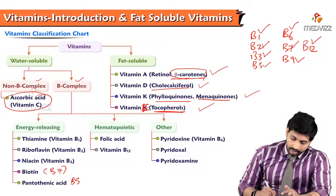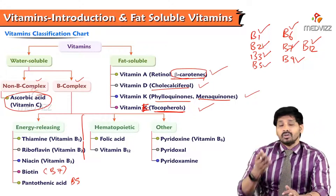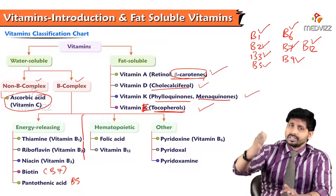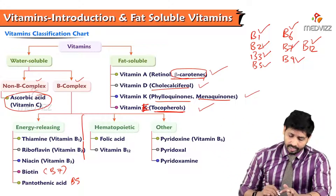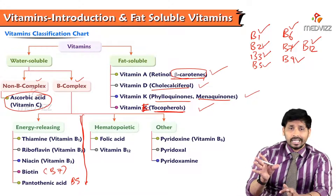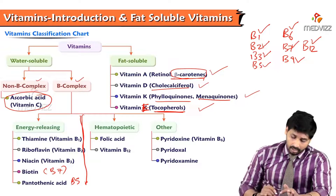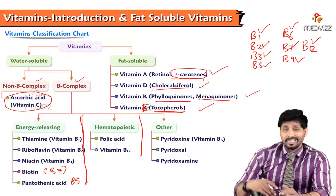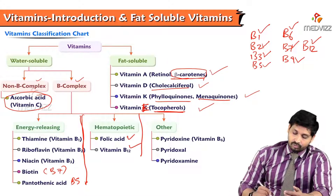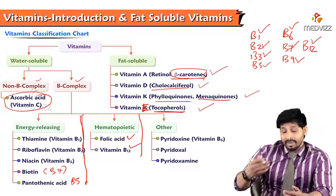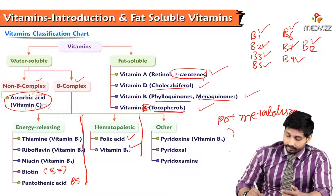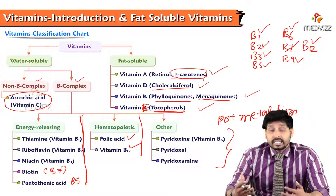These energy-releasing vitamins are involved in metabolic pathways such as glycolysis, the connecting link (oxidative decarboxylation), the TCA cycle, and the electron transport chain, assisting enzymes and supporting ATP production. For hematopoiesis — the synthesis of red blood cells and new cell formation — folic acid (B9) and B12 are required.